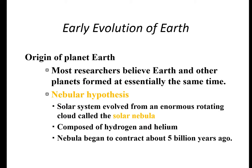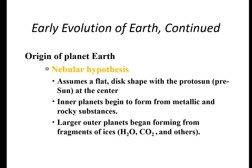Let's look at the early evolution of Earth — how the Earth formed four and a half billion years ago. Most researchers believe Earth and the other planets in our solar system formed at essentially the same time. We call this the nebular hypothesis, also known as the solar nebula theory. It says the solar system evolved from an enormous rotating cloud of gas and dust — mainly hydrogen and helium — that began to contract and spin about five billion years ago, assuming a flat disk shape with a proto-sun at its center where all the heavy metals went. The inner planets formed from metallic and rocky substances, while the larger outer planets formed from ices like water ice, carbon dioxide ice, and other volatiles like methane.